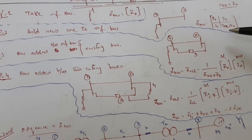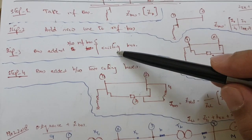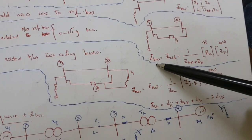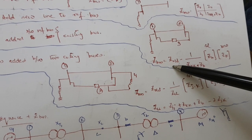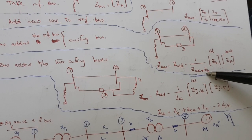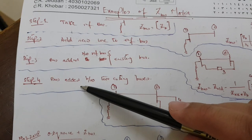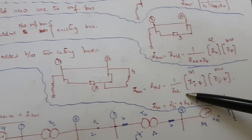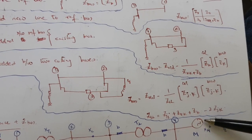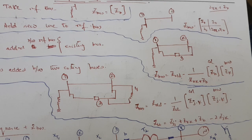Step three: if we have to add a bus between the reference bus and an existing bus — where the reference bus is the one connected with ground — we use: Z-bus new equals Z-matrix old, with one over Z-kk (the line to be added) plus Z-b (the reactance of the line), and the Z-k column and Z-k row. Step four: if the bus is added between two existing buses, we use the formula with one over Z-ll, where Z-ll equals Z-jj plus Z-kk plus Z-b minus 2·Z-jk.